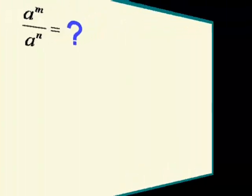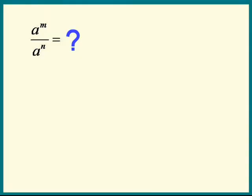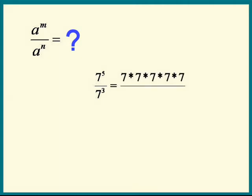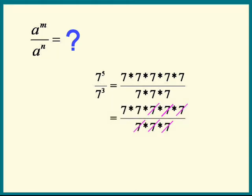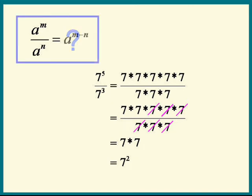Next let's try division: a to the m divided by a to the n. Here come our lucky sevens again — seven to the fifth divided by seven cubed. Seven to the fifth is seven times itself five times; seven cubed is seven times itself three times. Look at how the sevens just cancel out, and we have seven times seven left, which is seven squared. So the two comes from five minus three.